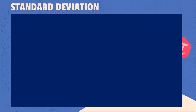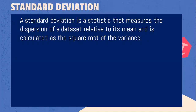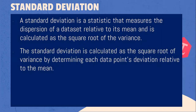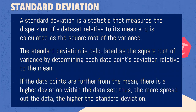What is standard deviation? It is a statistic that measures the dispersion of the data set relative to its mean and is calculated as the square root of the variance. The standard deviation is determined by finding each data point's deviation relative to the mean. If the data points are further from the mean, there is a higher deviation within the data set. Thus, the more spread out the data, the higher the standard deviation.